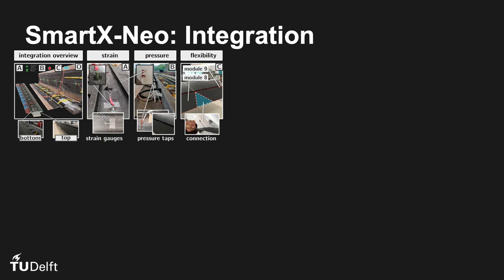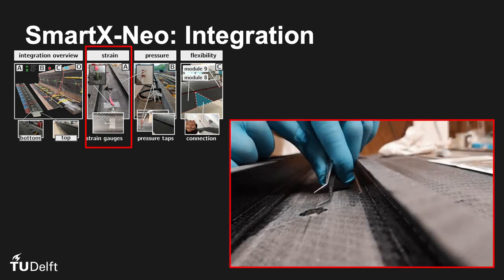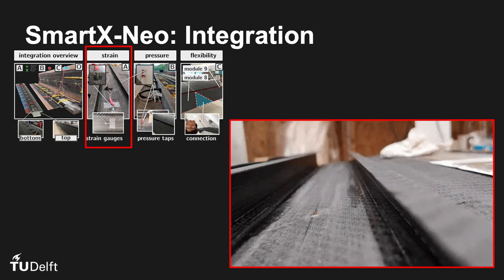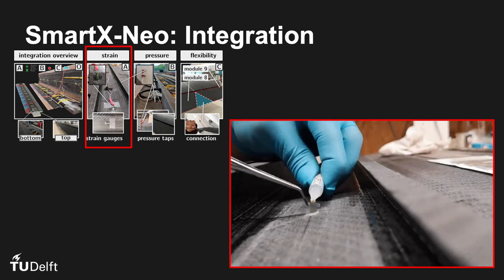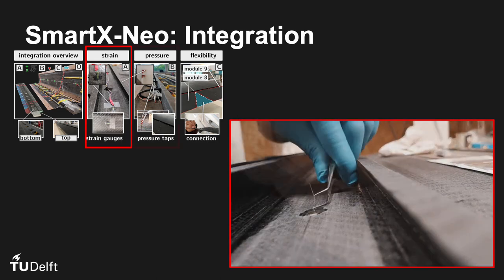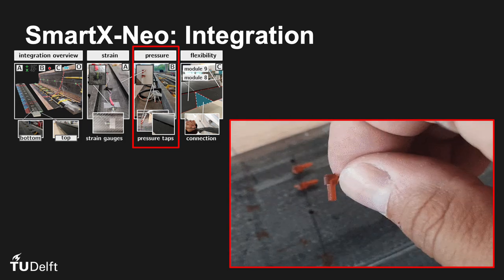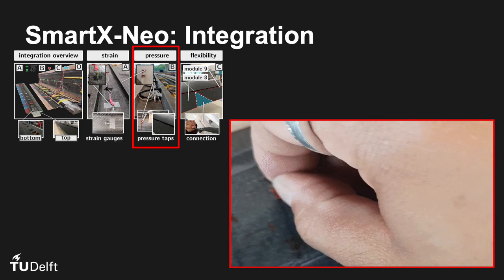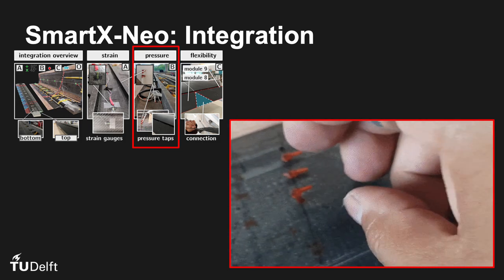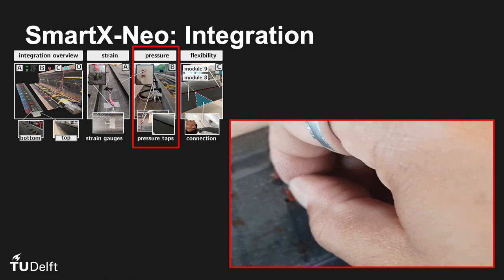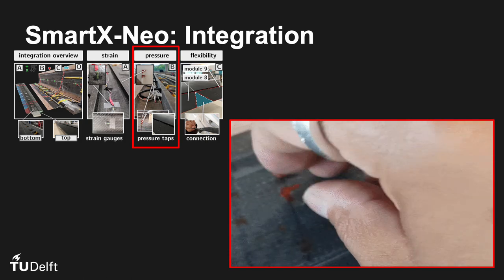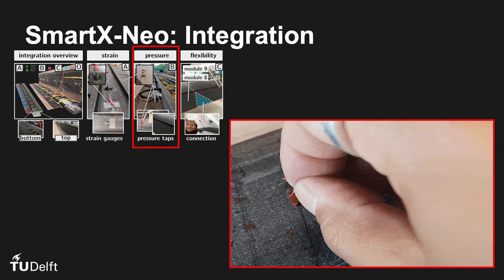The strain gauges are placed both in the 90 degree orientation and cross 45 degree to measure the strain. Pressure tabs are added for measuring the pressure distribution. These are high precision SLA print components with a tiny air channel, an interface allowing a pressure tube to be attached.